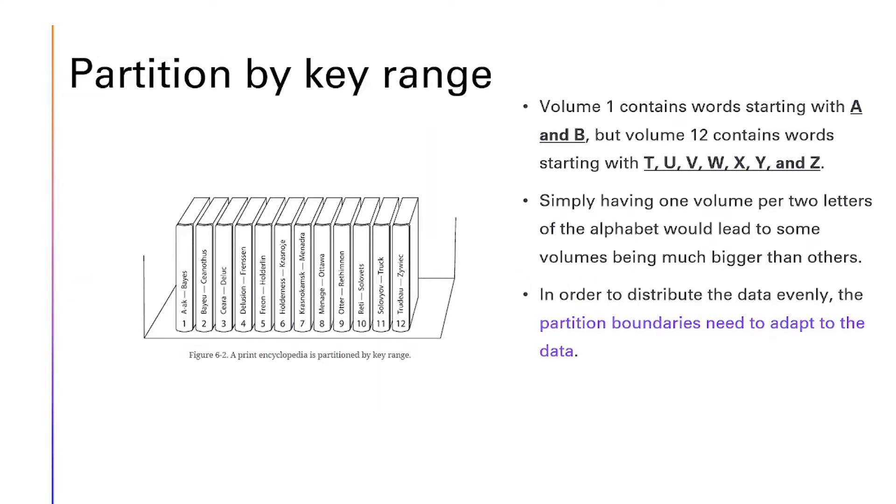Range partitioning. So, we are partitioning by a key range. Volume 1 contains words containing A and B, but volume 12 contains words starting with T, U, V, W, X, Y, and Z. We are talking of a print encyclopedia in this case.